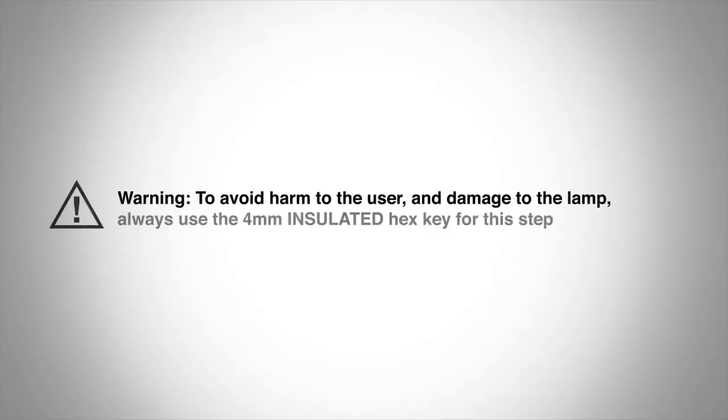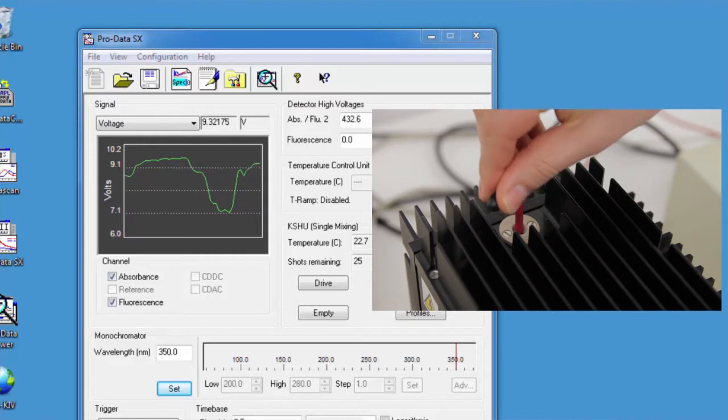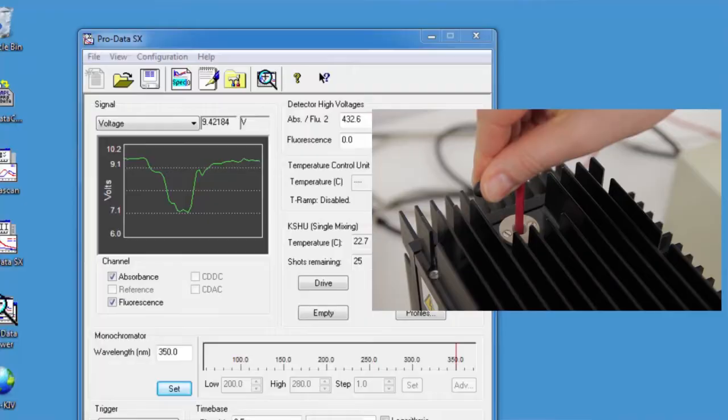To avoid harm to the user and damage to the lamp, always use the insulated hexagon key for this step. The aim is to achieve the greatest signal voltage possible. Turn the key until your signal voltage will increase no further, then move on to the other port and repeat.